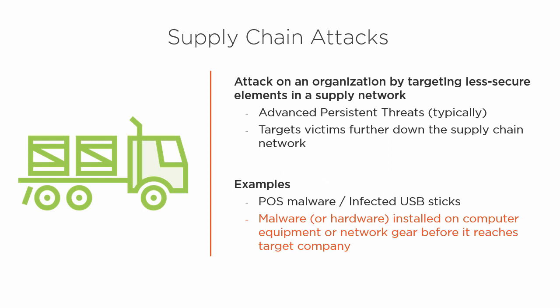Bad actors were able to intercept machines and install malware or physical components on the motherboards of routers and computers that were able to phone home. They put it back in the box, made it look fine, and shipped it to its final destination. Those pieces of equipment were put into production and started phoning home, giving information back to the command and control center or allowing back doors into the network. It's very important that we manage and understand where those weak links might be and take precautions as necessary.